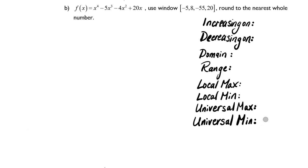The function we're using is x to the 4th minus 5x to the 3rd minus 4x squared plus 20x. Since we need to use our calculator for this because it's not obvious what this would look like, we do need to use the window given.